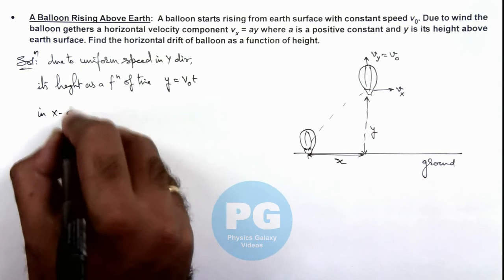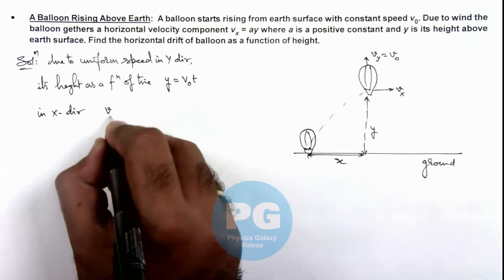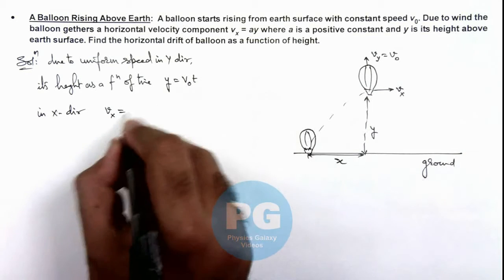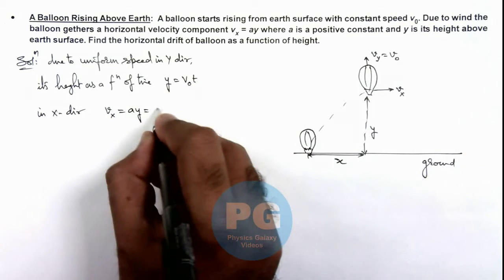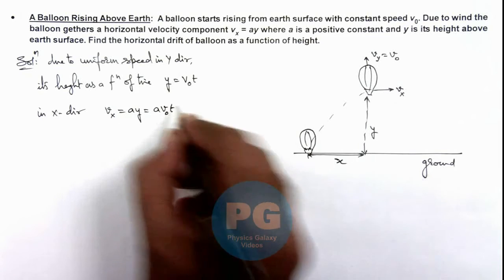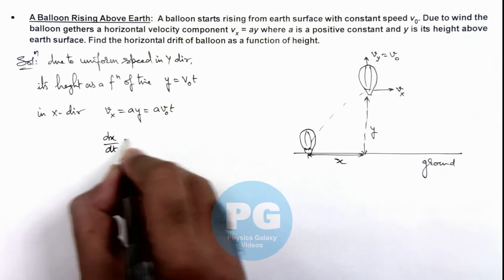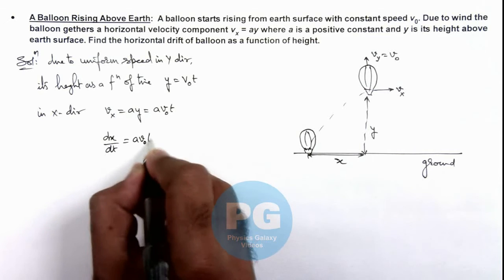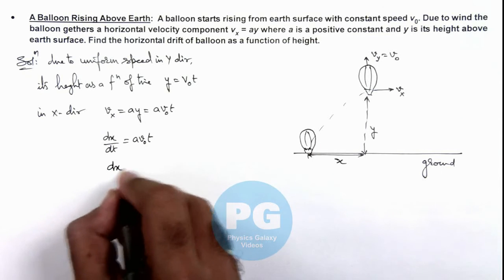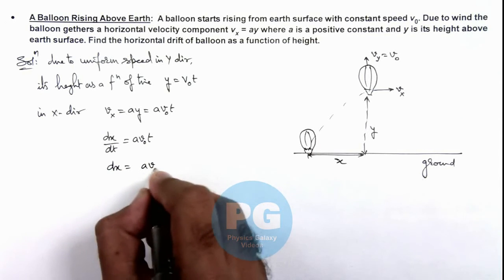In x direction or in horizontal direction we can write v_x which is given as ay*y, so this can be written as ay*v not*t. And v_x can be written as dx/dt which is equal to ay*v not*t, and here the value of dx we can write as ay*v not*t dt.